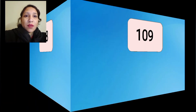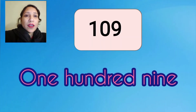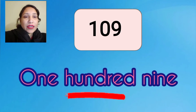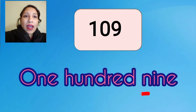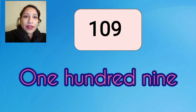The next number is 109. The spelling of 109 is O-N-E, one; H-U-N-D-R-E-D, hundred; N-I-N-E, nine. 109: one hundred nine.